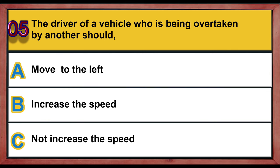Question 5. The driver of a vehicle who is being overtaken by another should: A. Move to the left. B. Increase the speed. C. Not increase the speed. Correct answer is C: Not increase the speed.